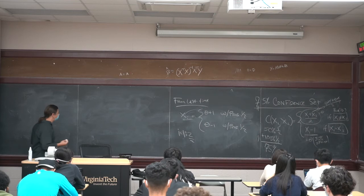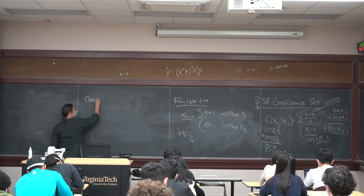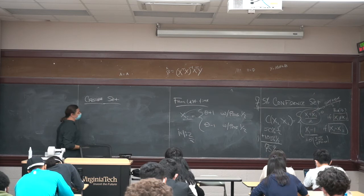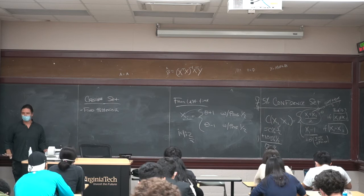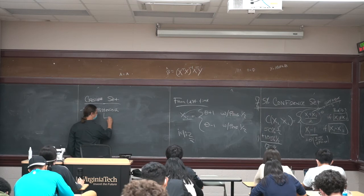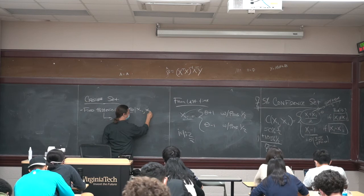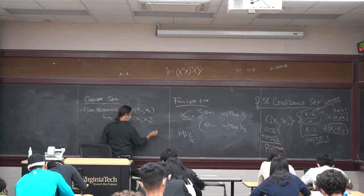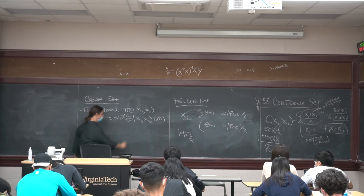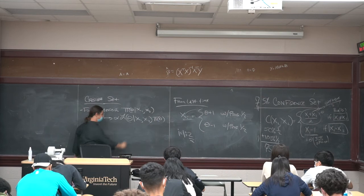A Bayesian writes down the likelihood function first and then starts thinking about what are good prior distributions — why to pick certain priors, what properties they have, what impact they'll have on the answer. At least there's a process: step one, understand what the sampling distribution is, then write down the likelihood function. So, credible sets — we need to find the posterior: pi(theta | x1, x2) proportional to the likelihood L(theta | x1, x2) times the prior pi(theta).